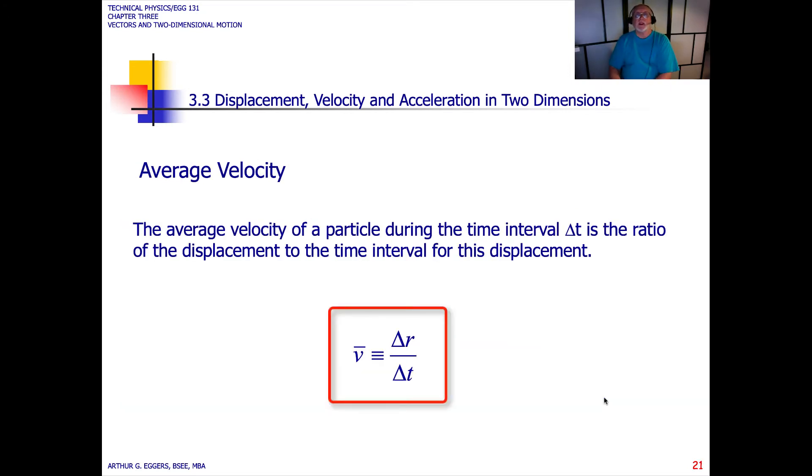Now we can define angular velocity using our polar relationship. The average velocity of a particle during the time interval delta t is the ratio of the displacement to the time interval for this displacement. We've got average velocity v with a little hat and line on top, defined with three lines, meaning it's defined as the change in the radius divided by the change in time: delta r by delta t.